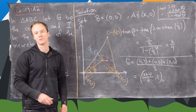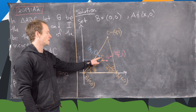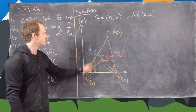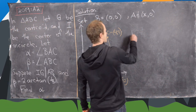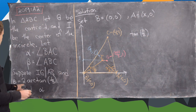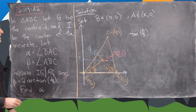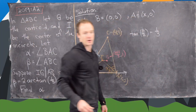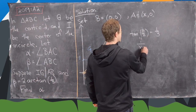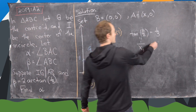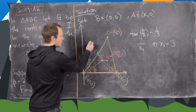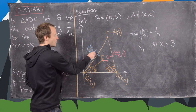We can calculate x₁ by taking tan(beta/2). Since beta/2 = arctan(1/3), we know tan(beta/2) = 1/3. We also know this equals 1/x₁ from the geometry, since I is at (x₁, 1). So 1/x₁ = 1/3, which tells us x₁ = 3. In other words, the incenter I is at the point (3, 1).